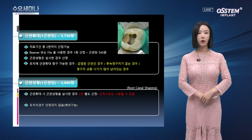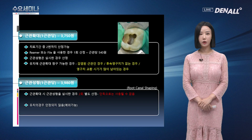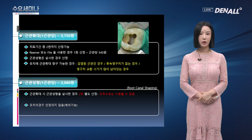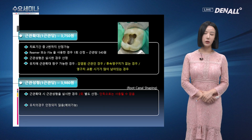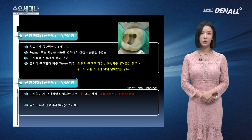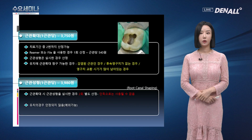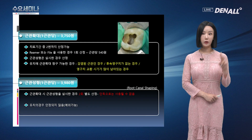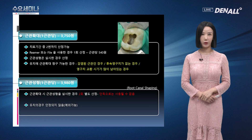근관 성형 항목입니다. 근관 성형은 1근관당이며 수가는 3,980원입니다. 근관 확대 시 근관 성형을 실시한 경우 2회 별도 산정하고, 단독으로는 사용될 수 없습니다. 두 번 산정한다는 것을 알아두시기 바랍니다.